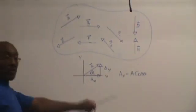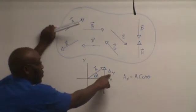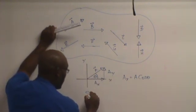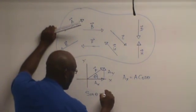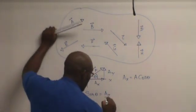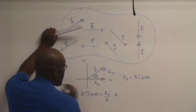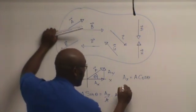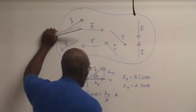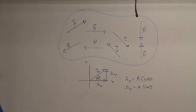We can do the same thing for the Y component using sine this time, because this A subscript Y is opposite to the angle. So sine of theta is A subscript Y over A. Multiply both sides by A, and we get A subscript Y equals A times sine of theta. Those two equations are the equations we're going to use to find these components.